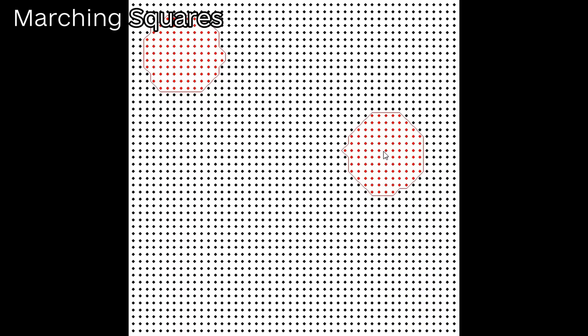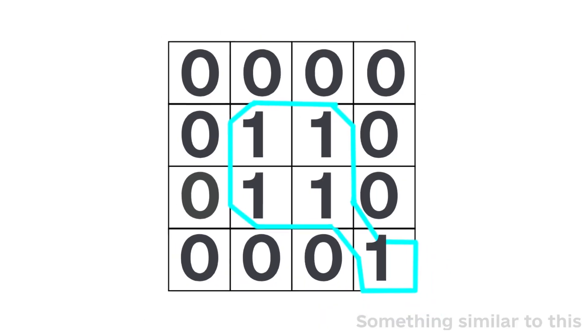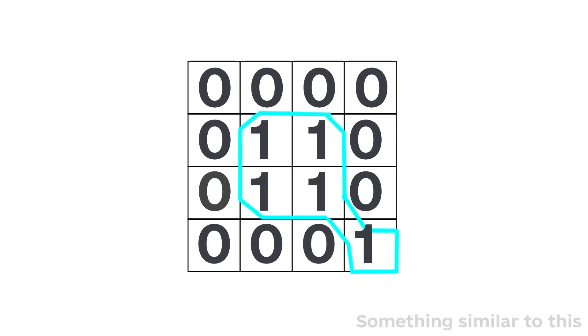Soon after soft bodies, I tried doing marching squares, which is a technique used to create outlines of shapes from data, like a grid of values. You can see that when I move my cursor to the circle on the top left, they sort of merge.